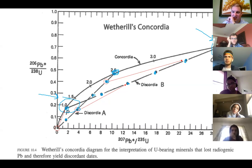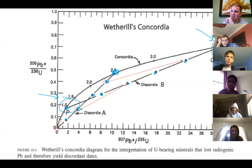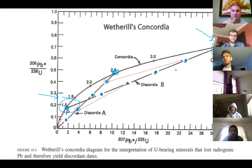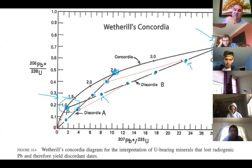Each of those points on the line to the origin individually starts to move along a curve, just like the concordia. They still maintain their linear relationship. The sample up here didn't lose any lead when disturbed. The sample down here lost all of the lead. And all these points in the middle lost some lead — a little or a lot. You'll get a concordia with points on there in a straight line and you just have to know how to read it — you won't have to do the math to create the concordia yourself.